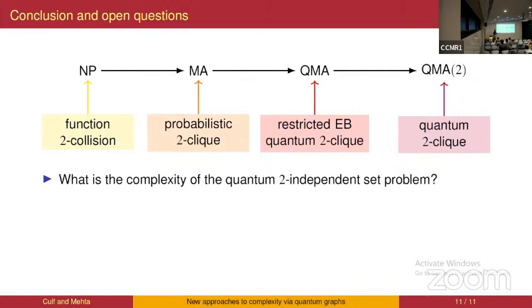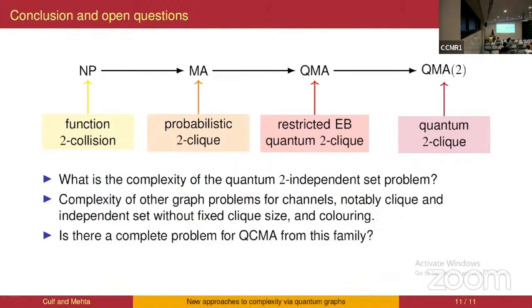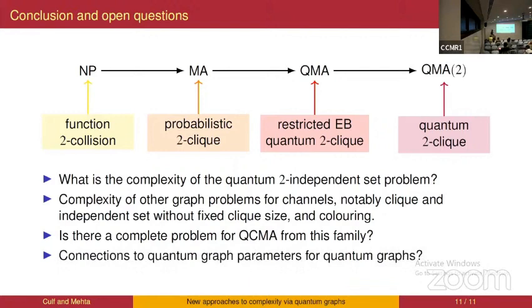Other graph problems could be adapted in this way to give interesting complexity-theoretic problems for quantum channels. Another class of interest is QCMA with classical proofs — there might be some construction of a problem from this class that gives a QCMA-complete problem. Finally, rather than classical graph parameters for quantum graphs, there are also quantum graph parameters related more closely to non-local games, and there could be a way to talk about these parameters for quantum channels to get interesting complexity problems. Thanks for listening.